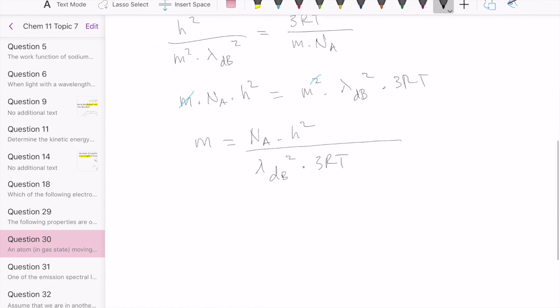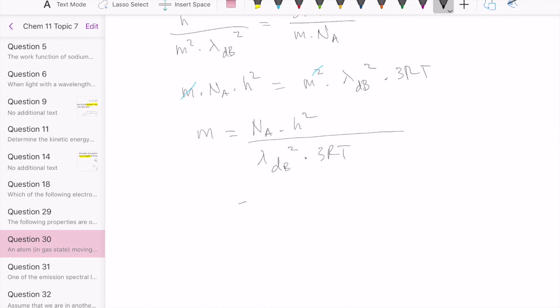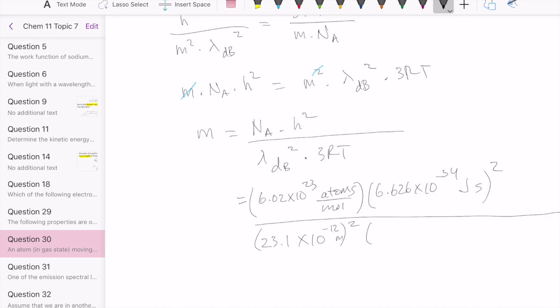Now once we have that, it's a matter of just plugging in the numbers to figure out exactly what the mass of one of these atoms is. So this is Avogadro's number. And then Planck's constant, 6.626 times 10 to the minus 34 joules second. And we're going to square that over the wavelength, which we were told is 23.1 picometer. So 23.1 times 10 to the minus 12 meter. And then square that. And then 3RT.